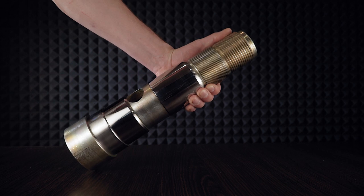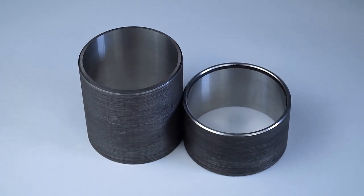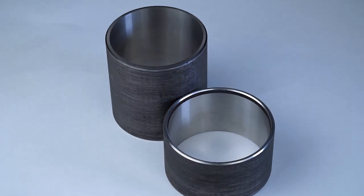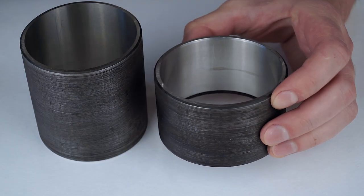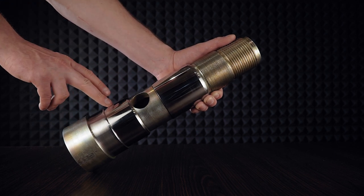This is a shaft. It has hardened stainless sleeves installed. They are made of special stainless steel, followed by hardening up to 50 Rockwell units. The outer surface of the sleeves is polished to the mirror state.